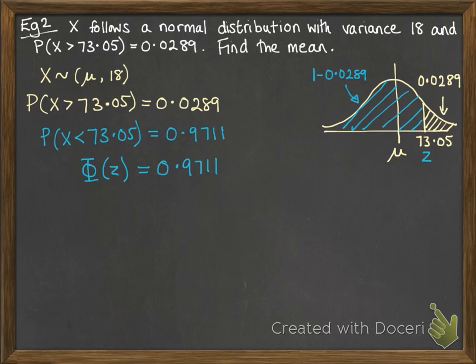So now let's think about that in terms of z, so we can read backwards off of our normal distribution table, and we get z equals 1.897.